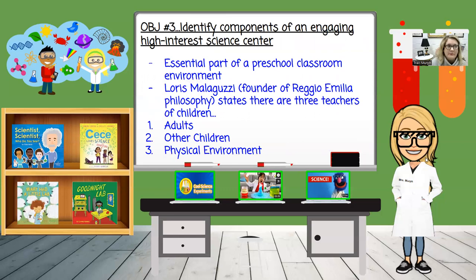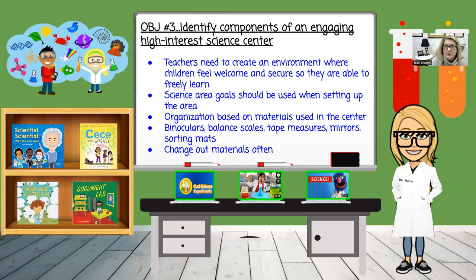Our objective number three is to identify components of an engaging, high-interest science center. A science area is an essential part of the preschool classroom. Loris Malaguzzi, founder of the Reggio Emilia philosophy, states that there are three teachers of children: adults, other children, and the physical environment. We need to create an environment in our classroom that children feel welcome and secure, so they are able to freely learn. When setting up a science area, think about your goals, then organize your materials — those you want to have, those already on hand, donated items, purchased items, and special items brought in for specific topics.